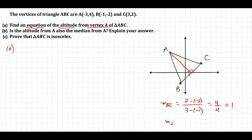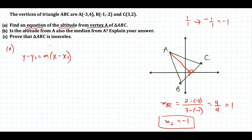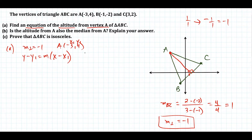Next, we want to find the slope of the perpendicular line. We take slope 1, think of it as 1 over 1, and find the opposite reciprocal. The opposite of positive is negative, and the reciprocal of 1 over 1 is still 1 over 1. So the slope we need is negative 1. We use point-slope form: y minus y1 equals m times x minus x1, with slope negative 1 and the point negative 3, 4, since the altitude comes from vertex A.